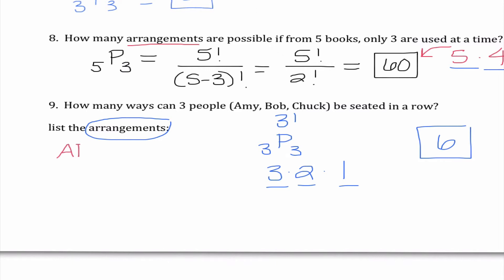So the first one would be Amy Bob Chuck then it could be Amy Chuck Bob. We could have Bob Amy Chuck or Bob Chuck Amy. We also could have Chuck Amy Bob and Chuck Bob Amy. So we can see that there are six different ways in which they could be seated.